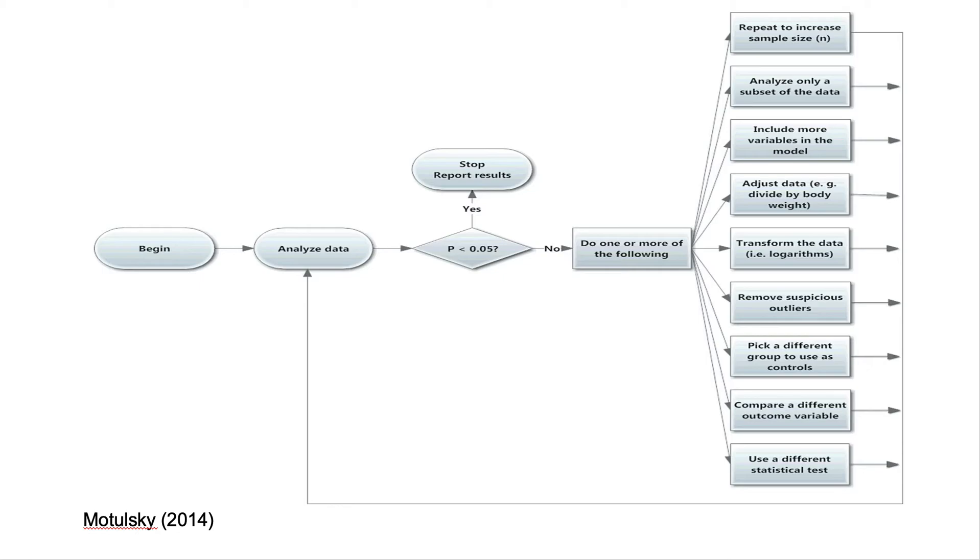Next, you can remove suspicious outliers. Though generally a good practice, it can be problematic when done as a reaction to a non-significant outcome. Okay, now next, picking a different group to use as a control. For example, if you carried out a study with a treatment and control and did not see a significant difference, so you look at the control group further and observe some participants may have taken something that could have produced similar effect as your treatment and you decide to just adjust your control group to exclude those participants.